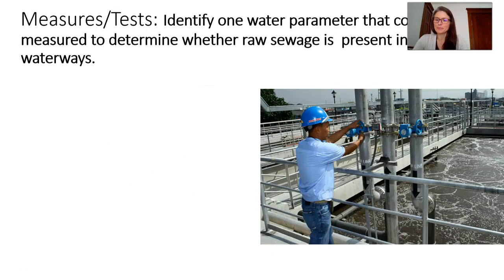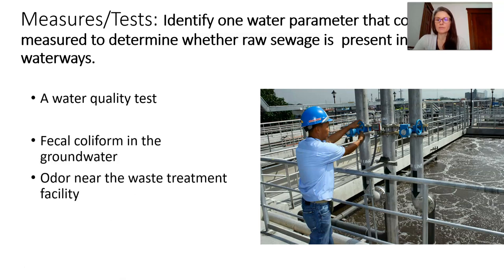Let's practice. Here's an example: what is a measure you could use to determine if sewage is present in surface waterways? How about a water quality test? Or fecal coliform in the groundwater and odor near the waste treatment facility?